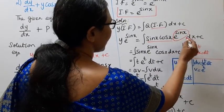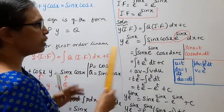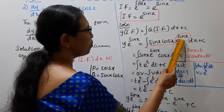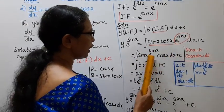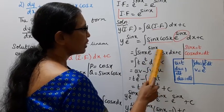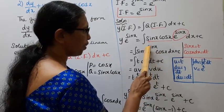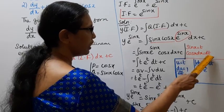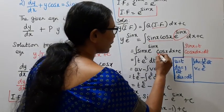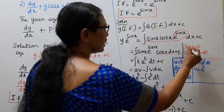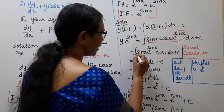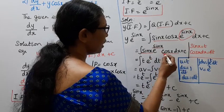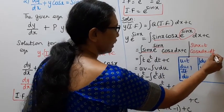So the solution becomes y·e^(sin x) = ∫sin(x)·e^(sin x)·cos(x) dx + c. To integrate this, we use the substitution: let t = sin(x), then differentiate to get cos(x) dx = dt. So sin(x) = t and cos(x) dx = dt, giving us ∫t·e^t dt + c.